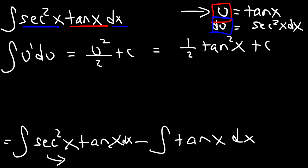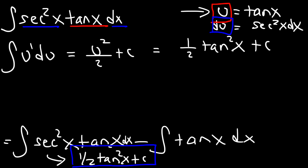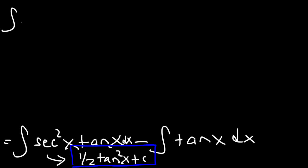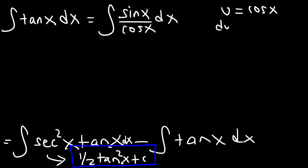Now let's focus on the integral of tangent x. How can we integrate tan x? What ideas would you recommend? The first thing I would recommend is to convert tangent into sine over cosine. And then we could use u substitution. We're going to make u equal to cosine x. So du is going to be negative sine x dx.